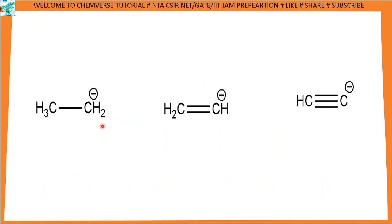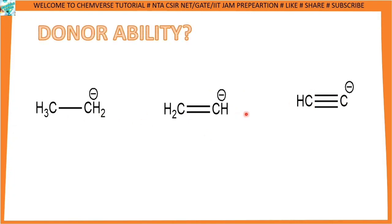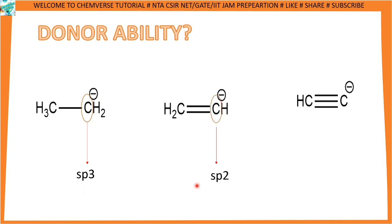Now let's look at three carbon ions. If I ask about donor ability: a negative charge means there is excess electron density over that carbon atom. Which species will donate electrons easily? The donor center here is the carbon atom. For the first case, hybridization is sp3; for the second case, hybridization is sp2; and for the third case, hybridization is sp.